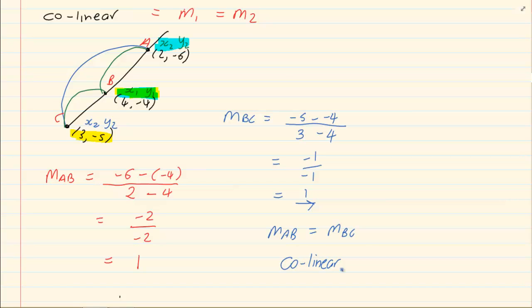Now, since M of AB is equal to M of BC, it is collinear. Collinear works much like parallel lines. The only difference is collinear means the points are on the same line whereas parallel means the two lines are parallel to each other but they have the same gradient. Thank you for watching.